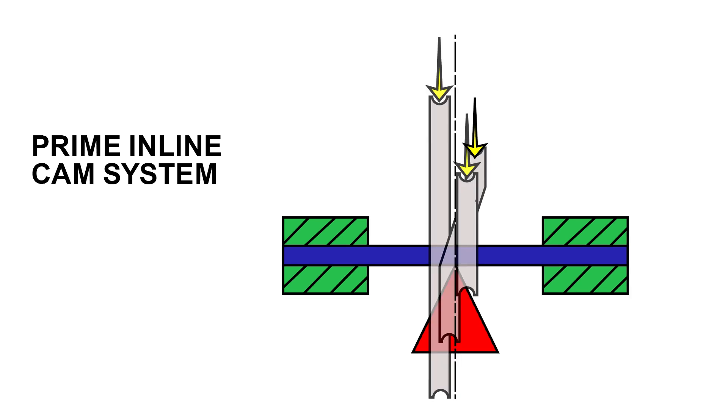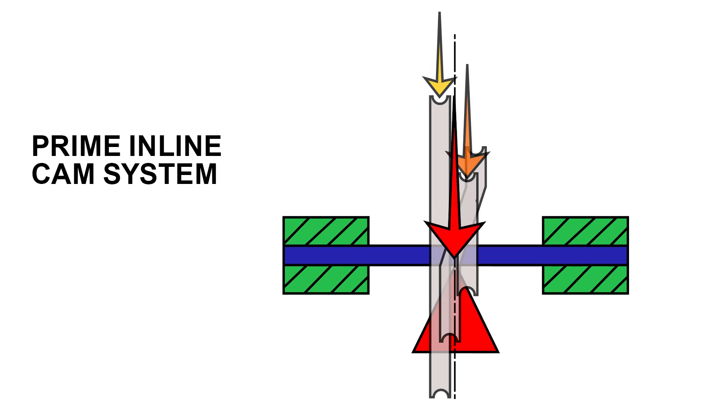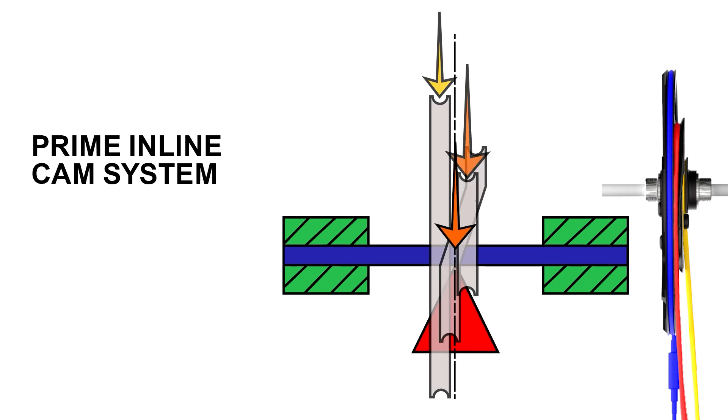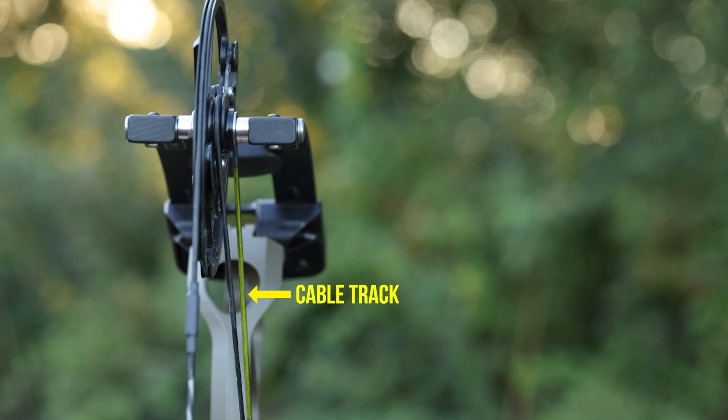What's different is that at full draw, as you pull the bow back, the string force, just like with the typical cam system, drops next to nothing. But then the cable forces are shifted over as they increase. The main cable, take up cable force moves. It's actually shifted over to be over the top of the center of the axle. And effectively what that does is it maintains the balance throughout the draw cycle.